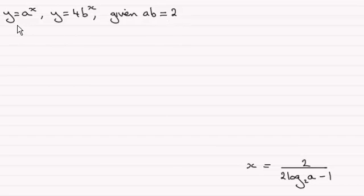And asked to show that at the point of intersection of these two curves, the x coordinate is given by x equaling 2, all divided by 2 log of a in base 2 minus 1. So how do we do this one?